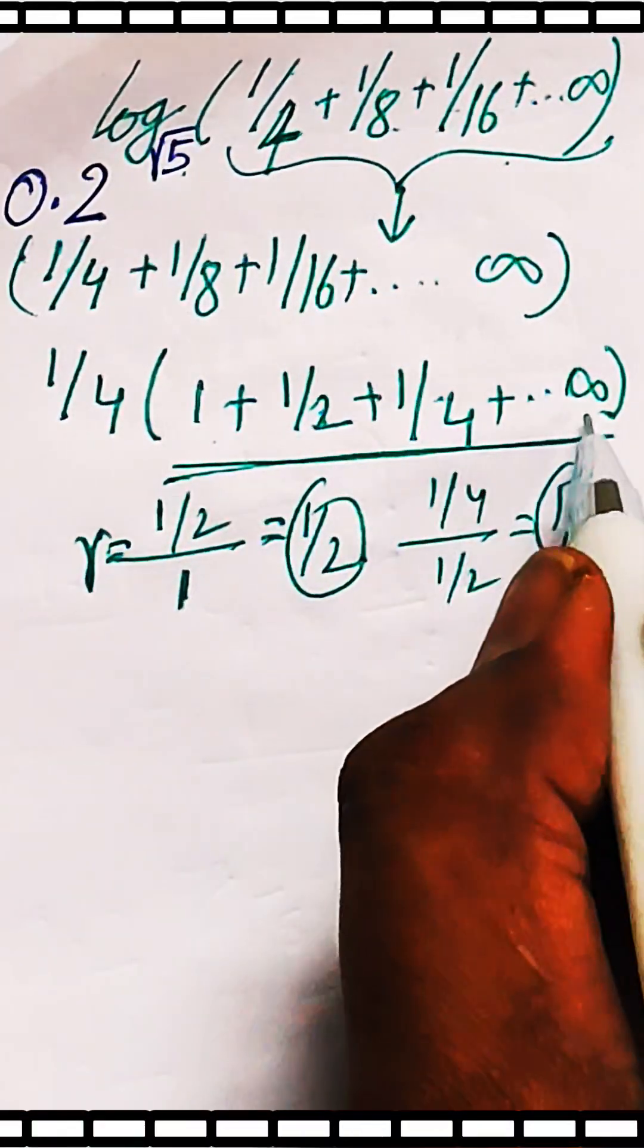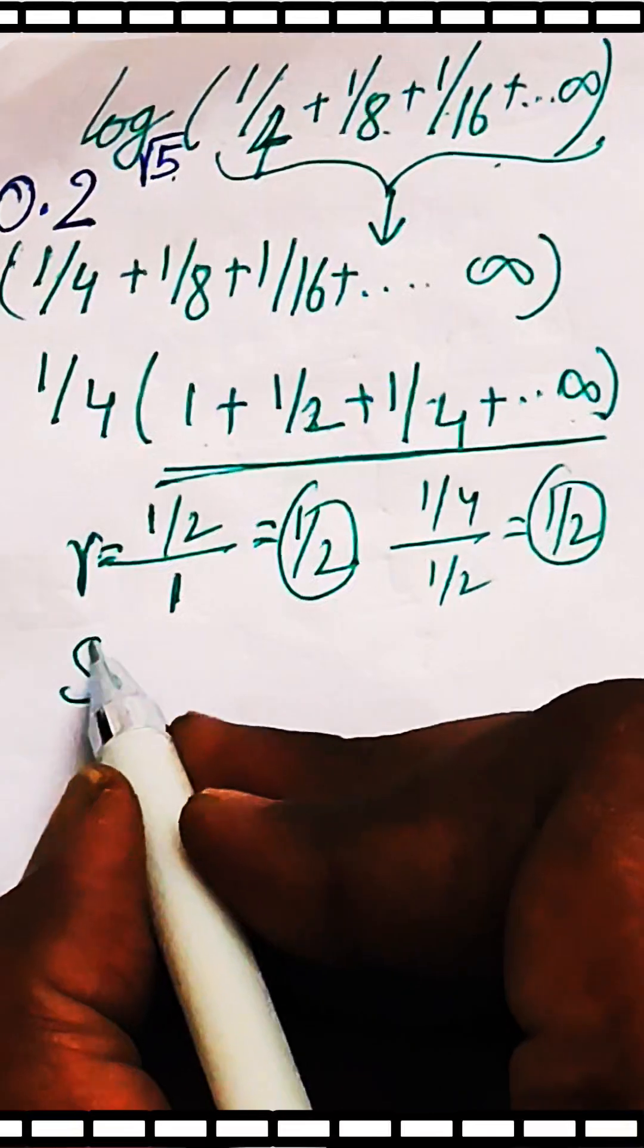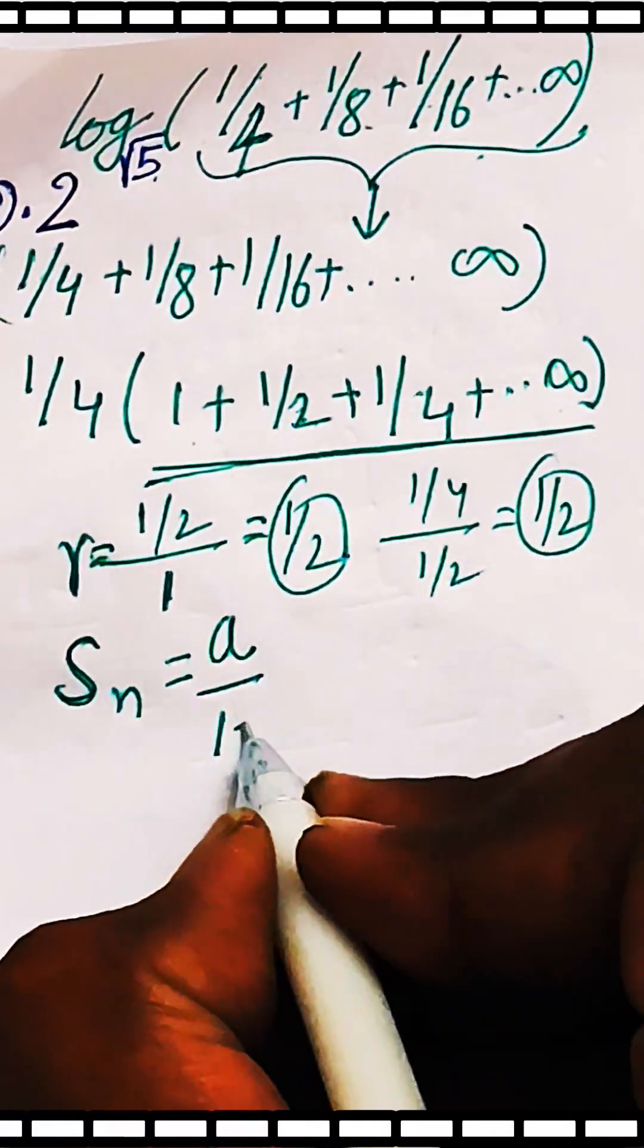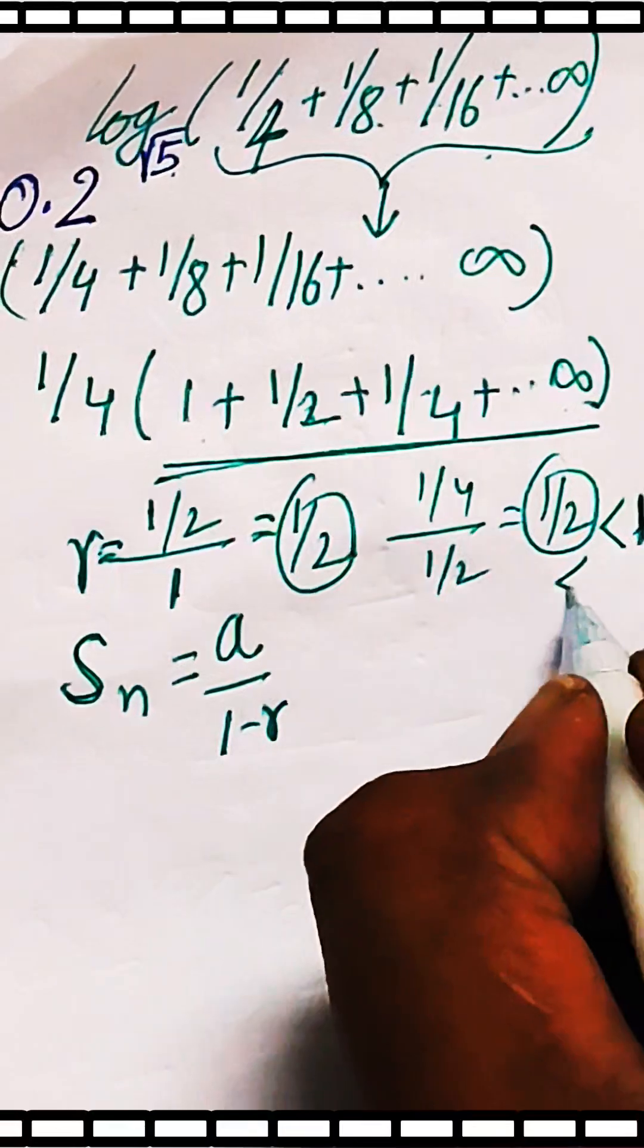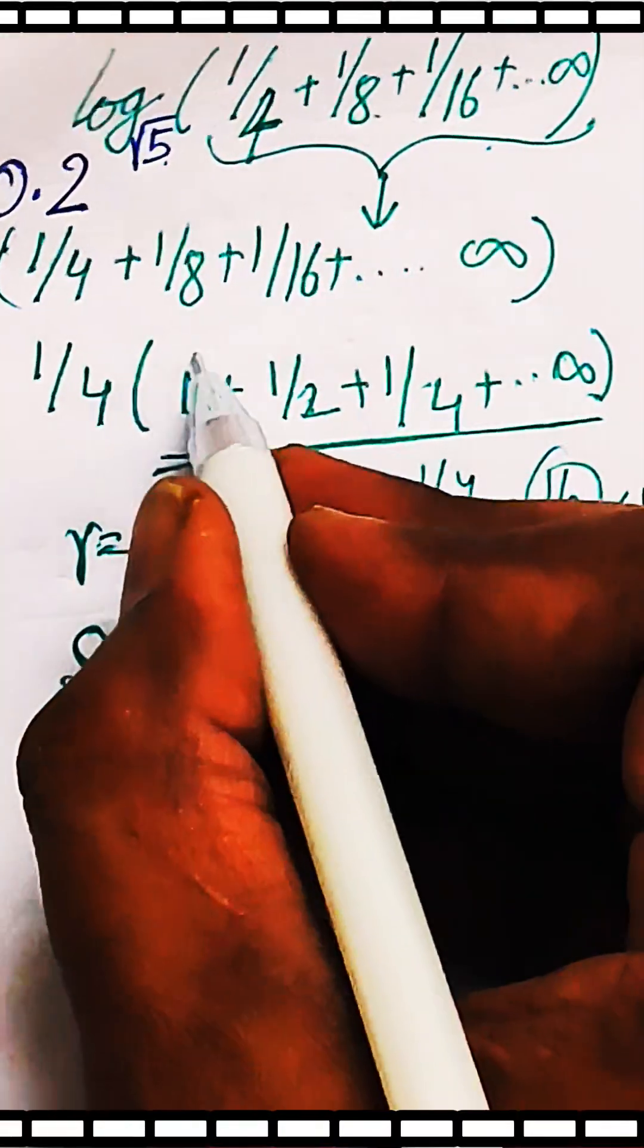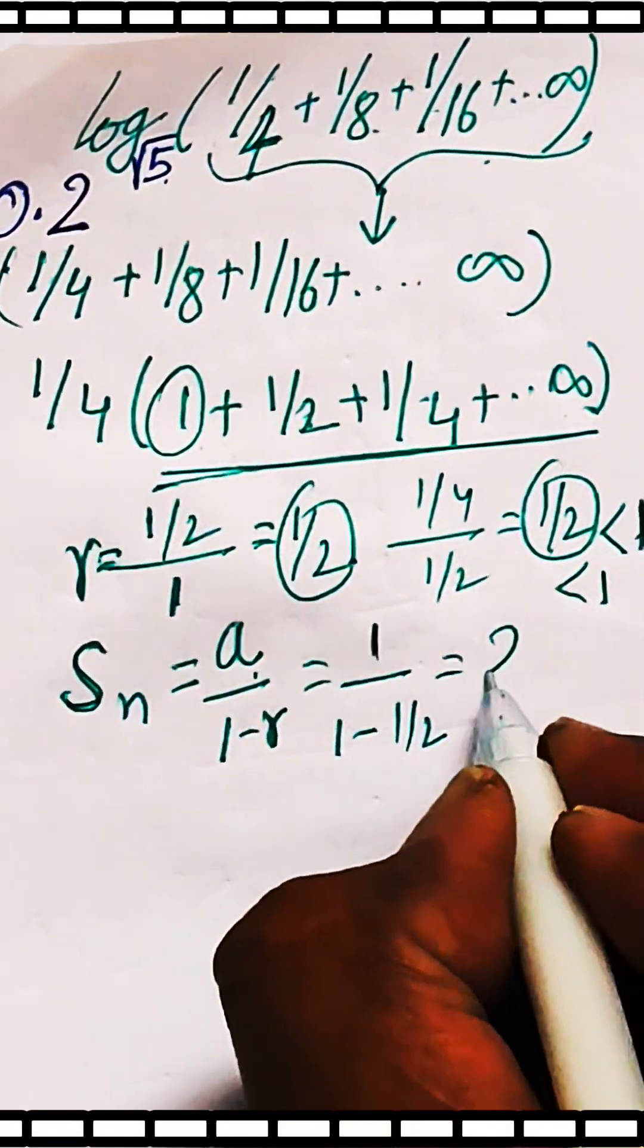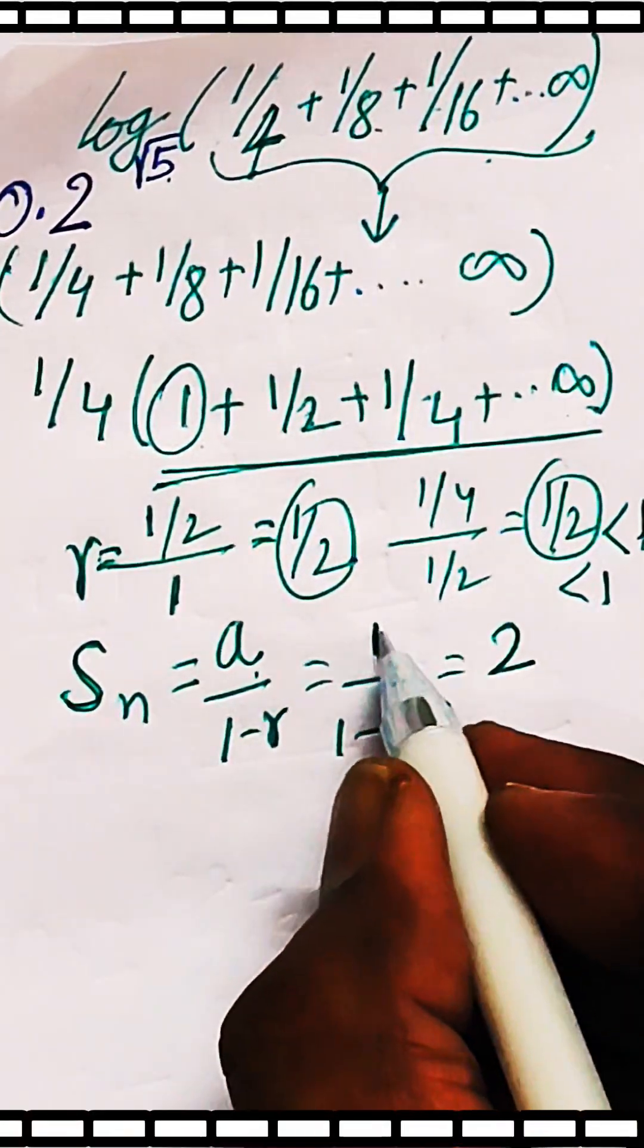The sum of n terms of this GP where n is infinity can be written as a/(1-r) because r is less than 1. Here the first term a is 1, so 1 divided by (1 - 1/2) will give a value of 2. One minus half is half, so the sum of this series is 2.